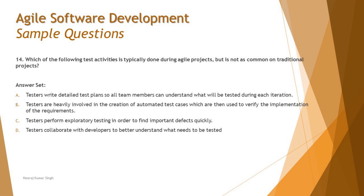Option A says: testers write detailed test plans so all team members can understand what will be tested during each iteration. The very first word — 'detailed' — tells you that's not agile. We talk about high-level documentation, very brief information. Agile promotes lightweight documentation throughout the lifecycle. This is a very tricky option if you don't concentrate on the word 'detailed' as a key parameter distinguishing agile.